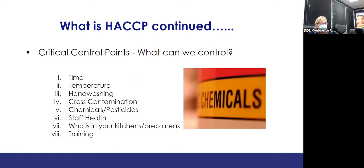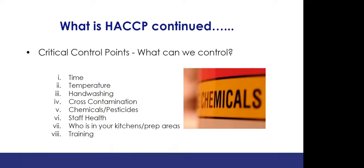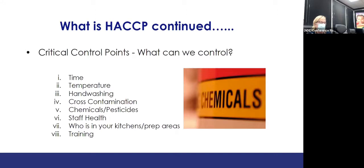Chemicals and pesticides — we must be diligent to keep chemicals away from food and to use our test strips for sanitizers to make sure the correct amount is used, so we don't cause chemical contamination by having them too strong. Read the bottles or manufacturer instructions. Some chemicals look like flour, oats, or salt, so it's easy to get them confused — that is why they are stored separately from food.